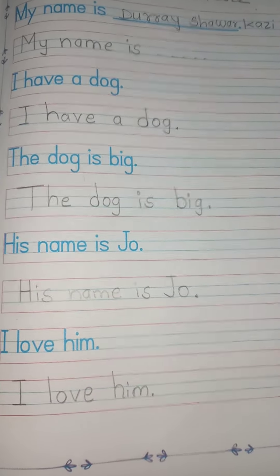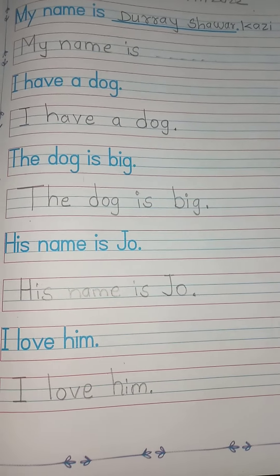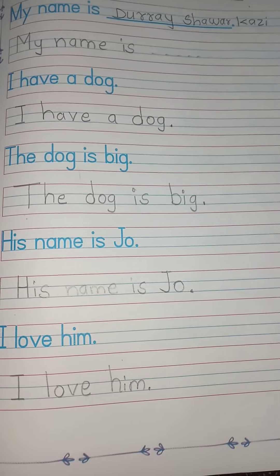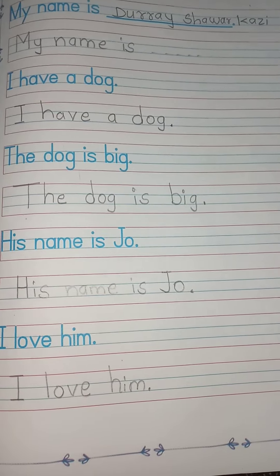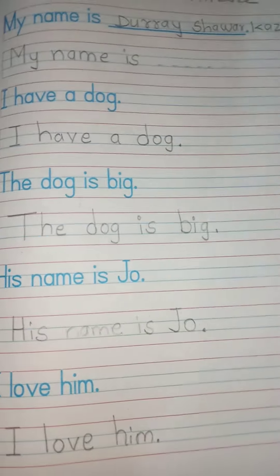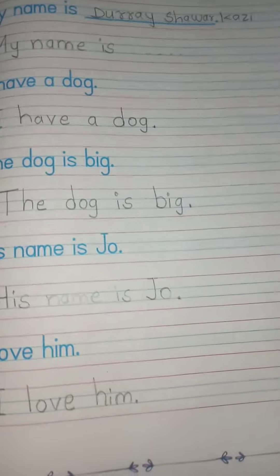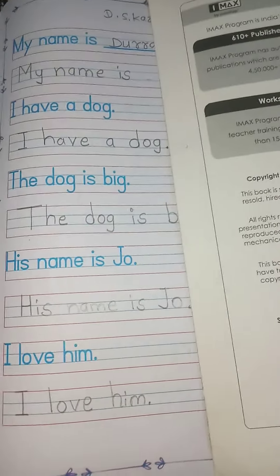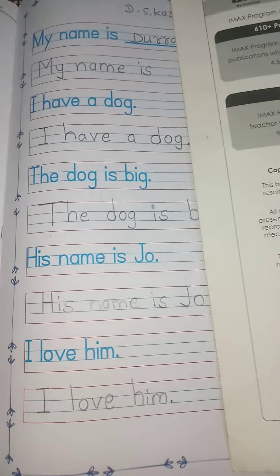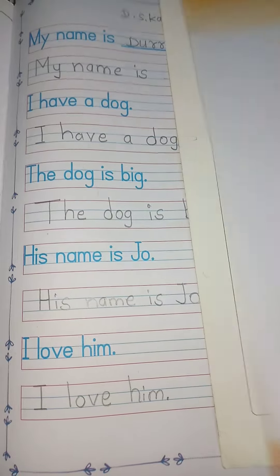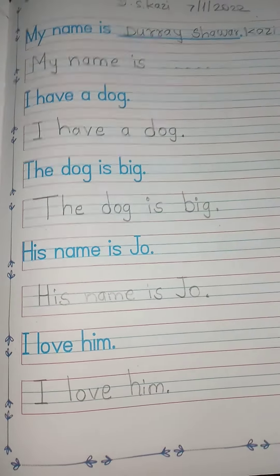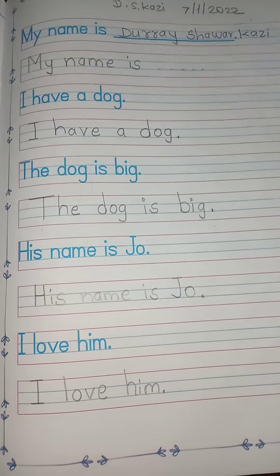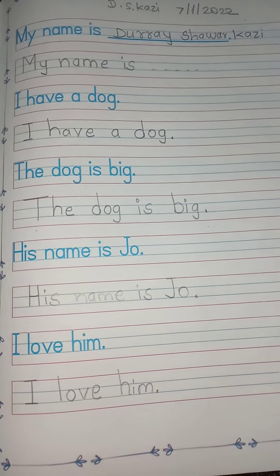Next one is: His name is Joe. Kuttae ka naam kya hai? Joe hai. So you have to repeat and write the same sentence: His name is Joe. I love him. I love him — mein apne kutte ko pyaar karthi hun. So you have to write the same sentence: I love him.